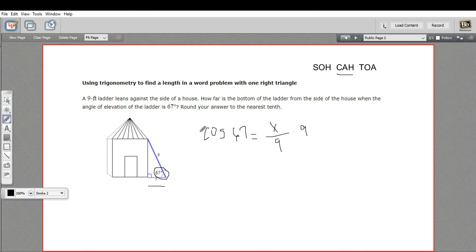And then to solve this for x, not too hard, we just multiply by nine. And so at this point, I would pull out my calculator and type in 67 and hit cosine, and then times nine, and I get 3.5 something. Looks like we're rounding to the nearest tenth, so looks like our side equals 3.5 feet. So that's how far the ladder is away from the wall.